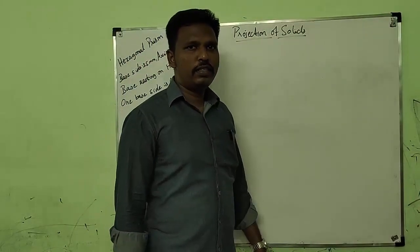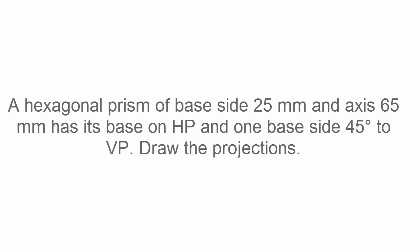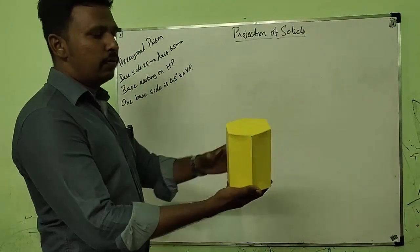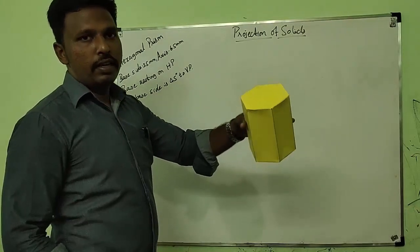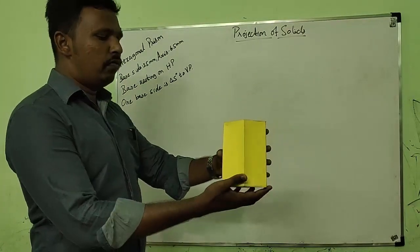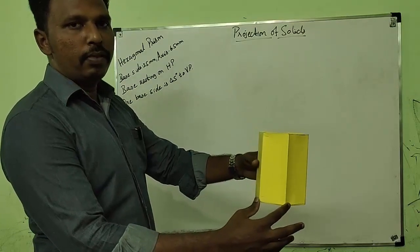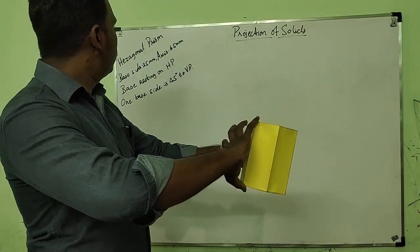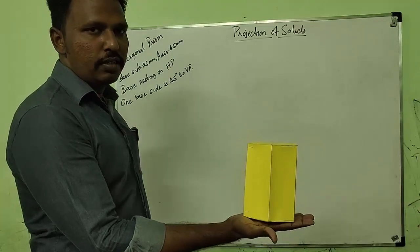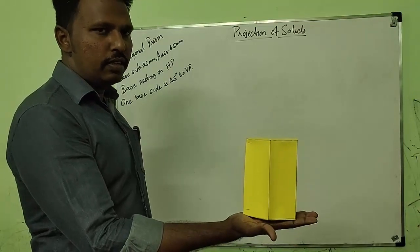Welcome back to Projection of Solids. The object given in this problem is a hexagonal prism. A hexagonal prism of base height 25 mm and axis height 65 mm is resting on HP with its base. So it is a simple position.